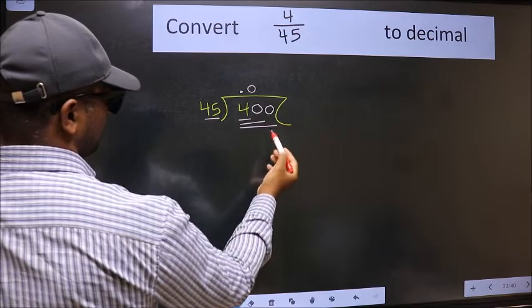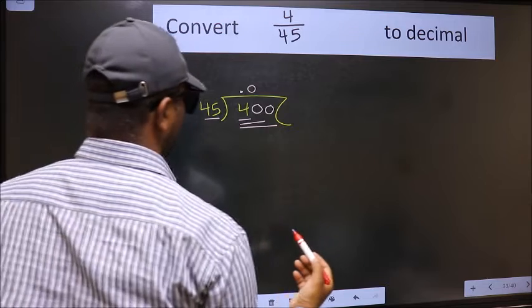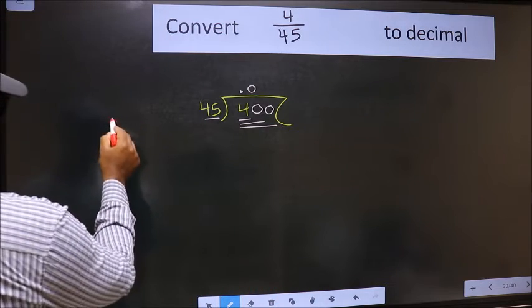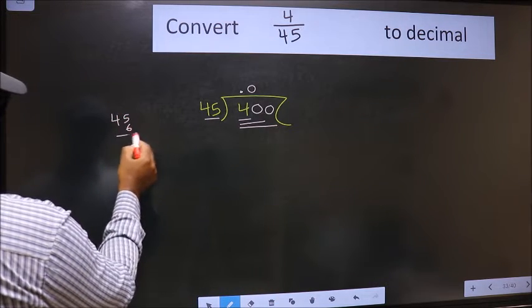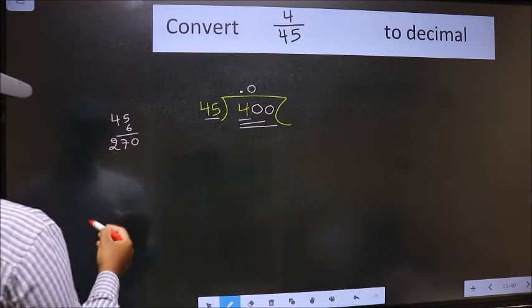So 400. A number close to 400 in 45 table is, let us check with 6. 0 here, we get 270. No.